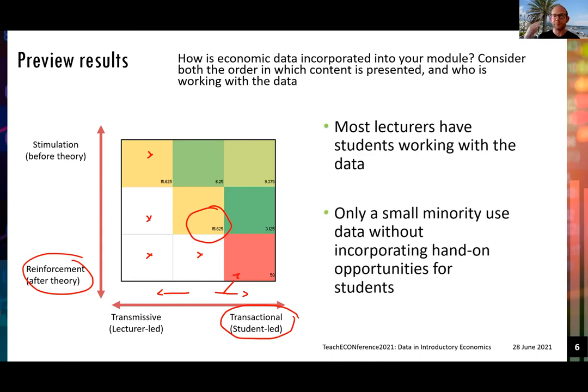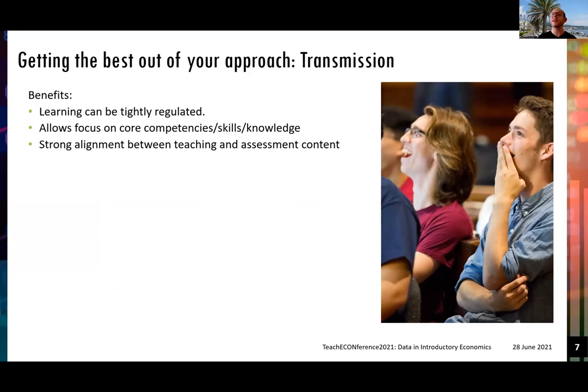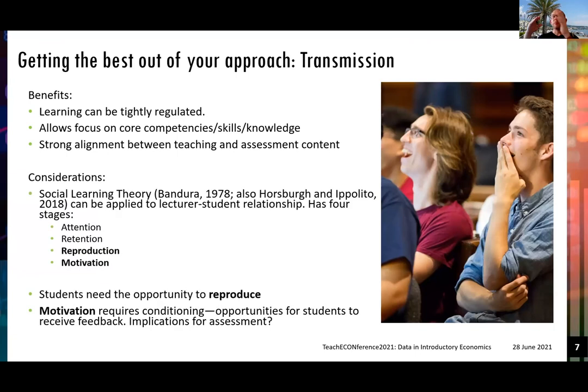So these are just as a preview of our results. What can we do with this? Well, we can think about, given that we've seen that there are some transmission approaches and some transactional approaches, we can think about how we get the best out of these approaches. So transmission - great. Learning can be tightly regulated. It allows a focus on core competencies. Nice line between teaching and assessment. Because we are, if you like, telling students and hoping students just pick up the information that we are transmitting to them, there are potential implications for assessment of student learning.